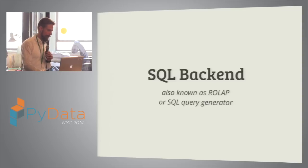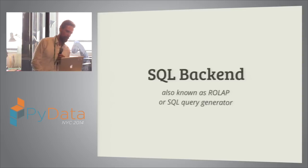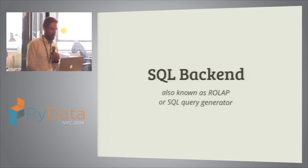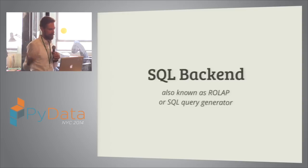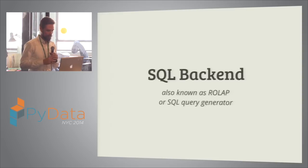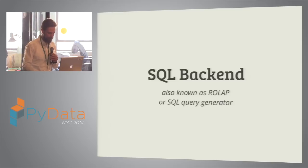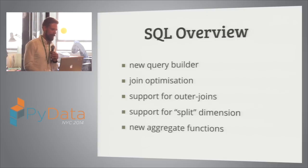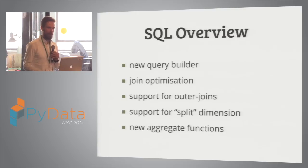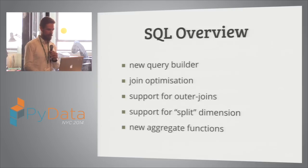My favorite part is the SQL backend, also known as relational OLAP or the SQL query generator in Cubes. This is the built-in backend — it comes with Cubes when you install it. You also get a MongoDB backend, but the SQL backend is the most developed one. What's new in the SQL backend: a new query builder, join optimization, support for other join types, support for the split dimension, and new aggregate functions.